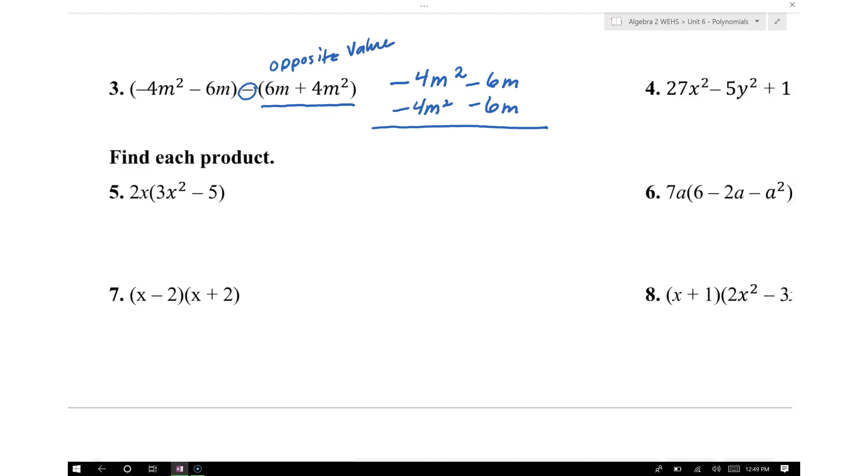But in fact, we know that negative 4 plus negative 4 gives us negative 8m squared, and we know that negative 6m minus 6m gives us negative 12m.